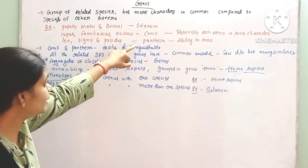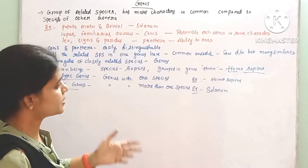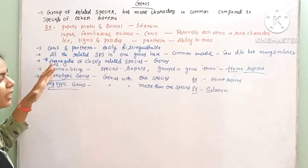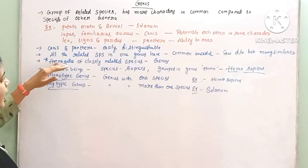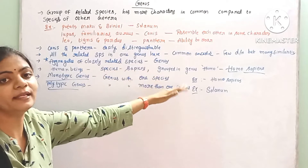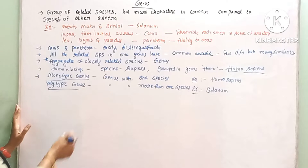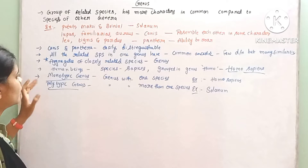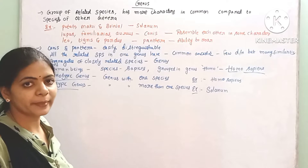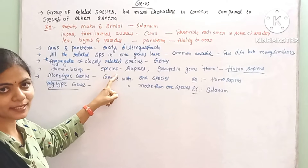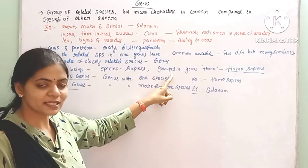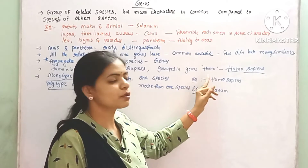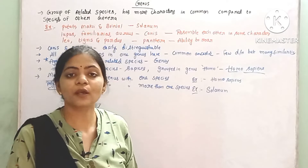All the related species in one genus have a common ancestor — of course they have a few differences but many similarities. So an aggregate of closely related species is called a genus or genera. For example, human beings belong to the genus Homo, so the scientific name is Homo sapiens.